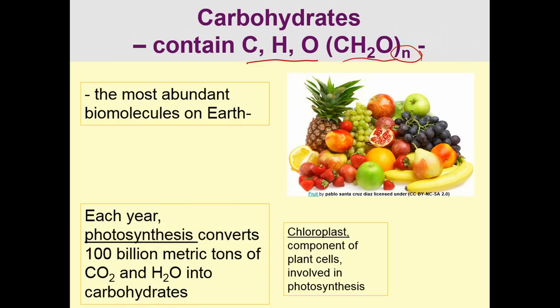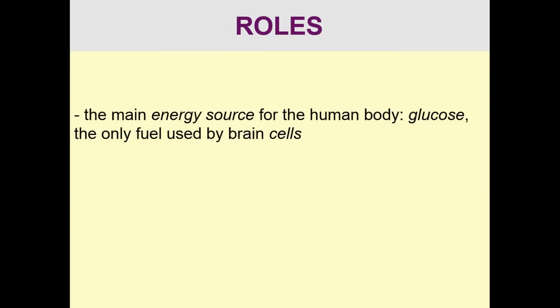This happens in the chloroplast, which is the component in the plant cell involved in photosynthesis. The first thing you might think of when talking about carbohydrates is their role as an energy source, and that is their main role. They are the main energy source for our body — specifically glucose, which we'll be talking about most in this lecture, is the only fuel used by your brain cells.